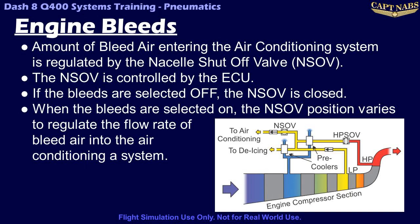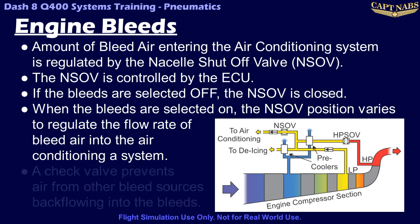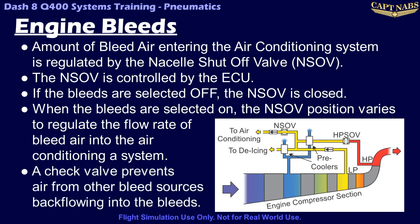After the nacelle shutoff valve, there is another check valve. This valve prevents pressurized air from other bleed sources, such as the APU or the other engine, from backing up into the bleed system of this engine.